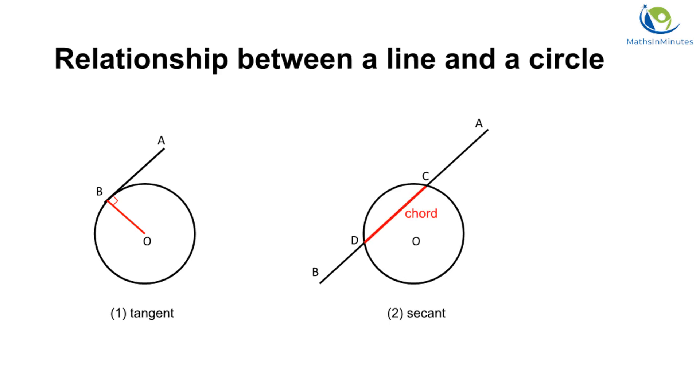Along the secant, the line segment CD between the two intersection points is called a chord of the circle.